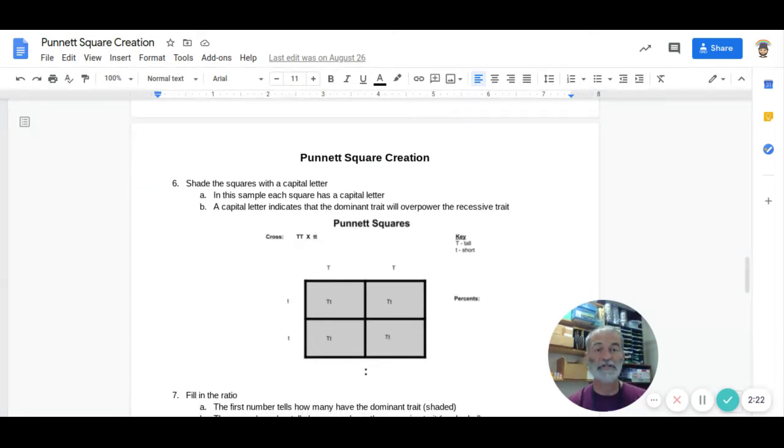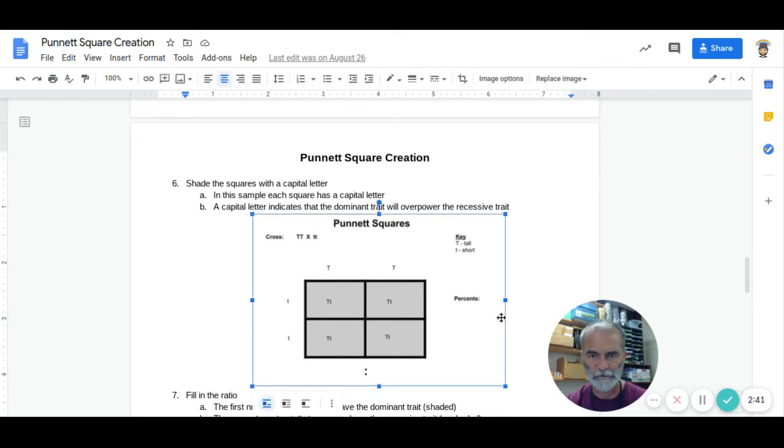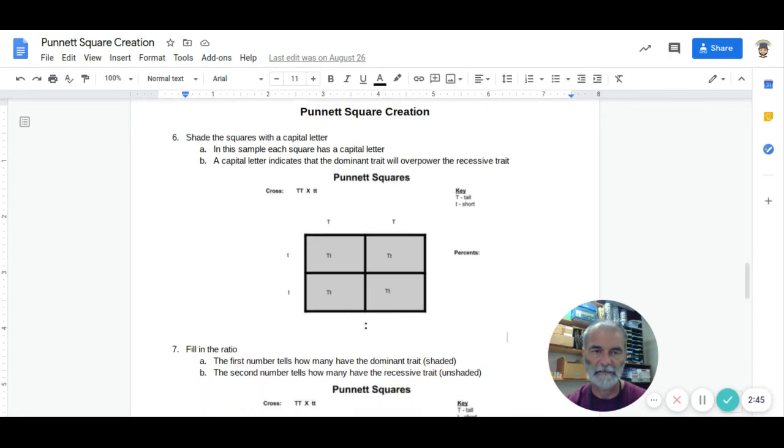The next thing we're going to do is shade the squares that have a capital letter. If we look at each one of these squares, there's a capital letter in each one. They will not always all be capital letters, but in this example, they're all capital letters. Remember, the dominant is stronger, it covers the recessive, and that's why we shade them.